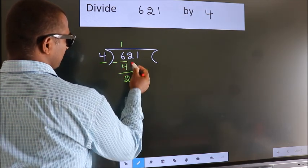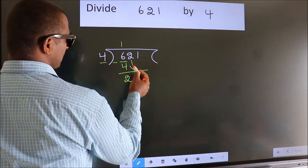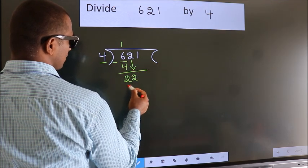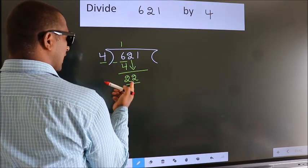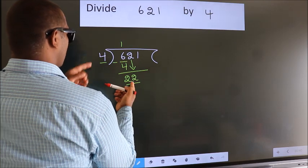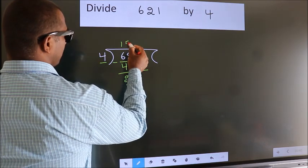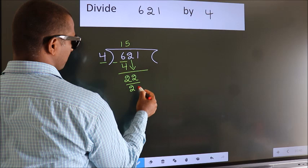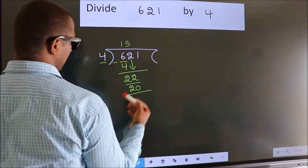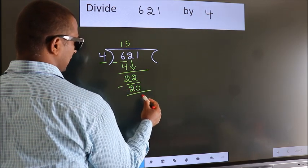After this, bring down the beside number. So 2 down, so 22. A number close to 22 in 4 table is 4 5s 20. Now we subtract. We get 2.